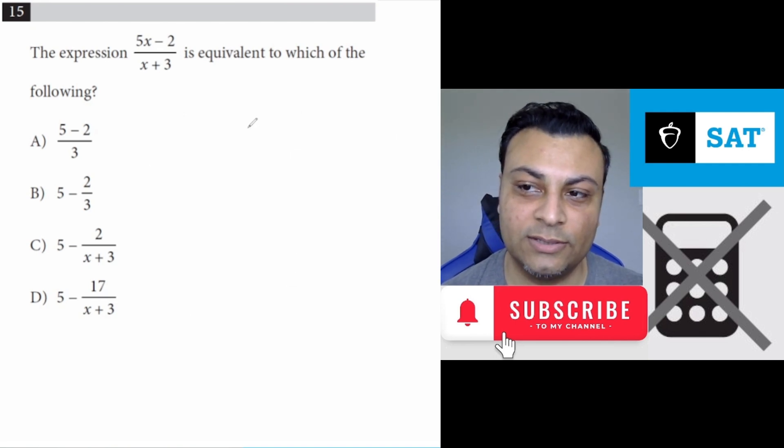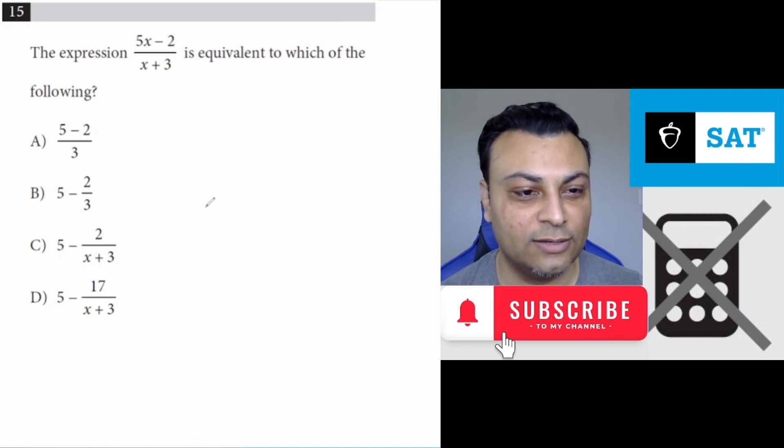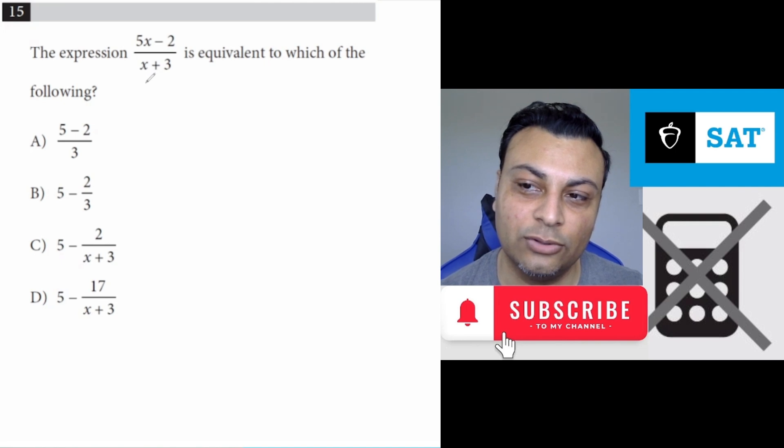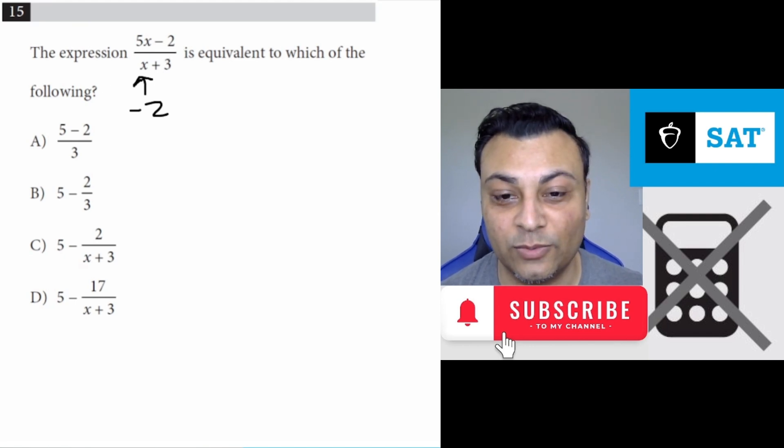The third way is to say, okay look, I'm just going to try a value for x and see which of these match. And in that method, a good value to plug in would be negative 2. Why negative 2? Because if you put negative 2 into here, you get a 1 in the denominator, which is very easy to divide by 1.